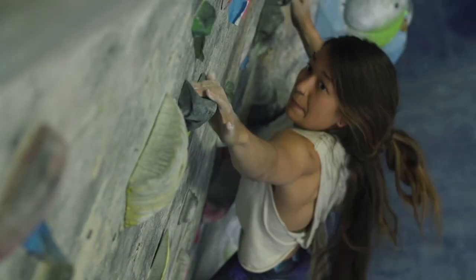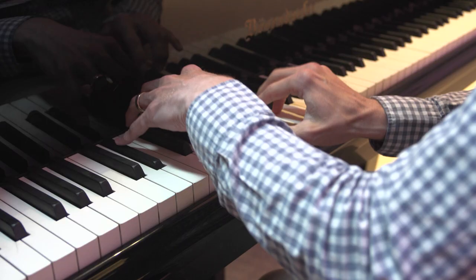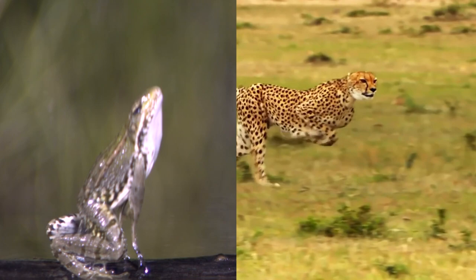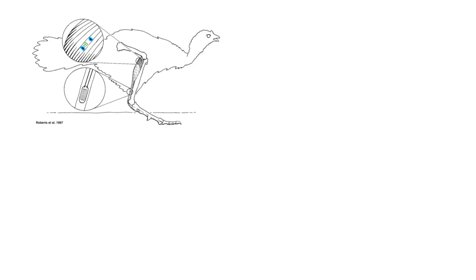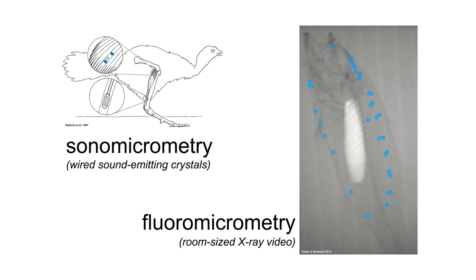Nearly all human and animal movement is driven by muscles. Muscles give us strength, speed, and agility. Technologies for measuring muscle motion, such as sonomicrometry and fluoromicrometry, have significantly advanced our understanding of how animals and humans move.